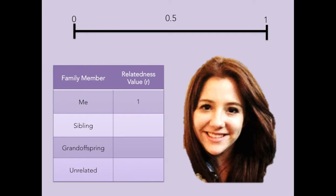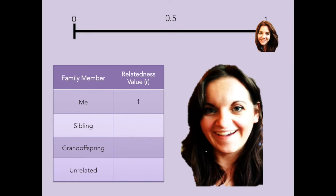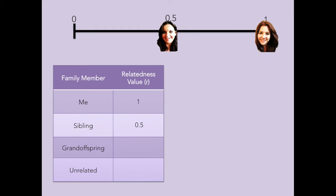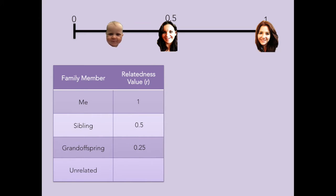I share 100% of my genes with myself, so my relatedness value to myself is 1. My full sister shares roughly 50% of my genes, and so her relatedness value to me is 0.5. My grandchild shares about 25% of my genes, and so their relatedness value to me is 0.25.